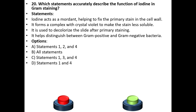Twentieth question — the last question. Which statements accurately describe the function of iodine in gram staining? Statements: Iodine acts as a mordant, helping to fix the primary stain in the cell wall. It forms a complex with crystal violet to make the stain less soluble. It is used to decolorize the slide after primary staining. It helps to distinguish between gram-positive and gram-negative bacteria.